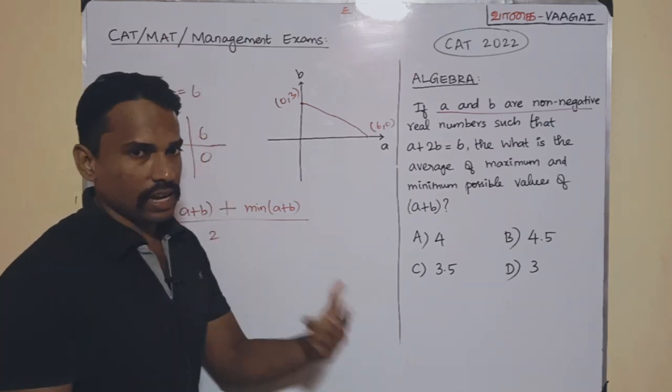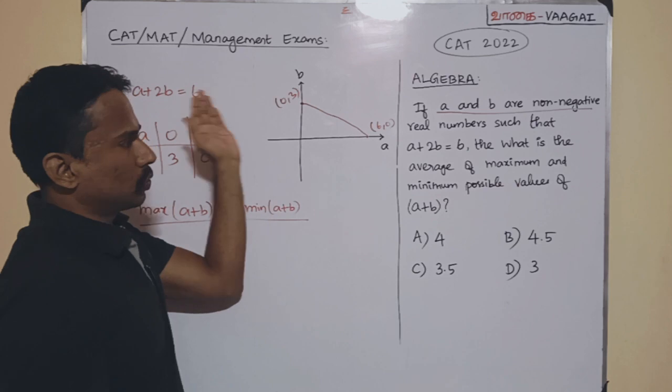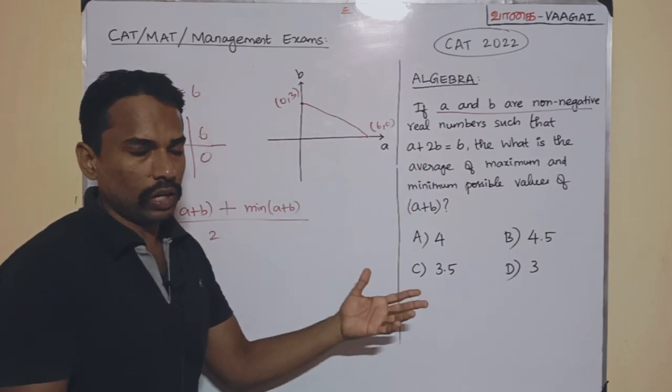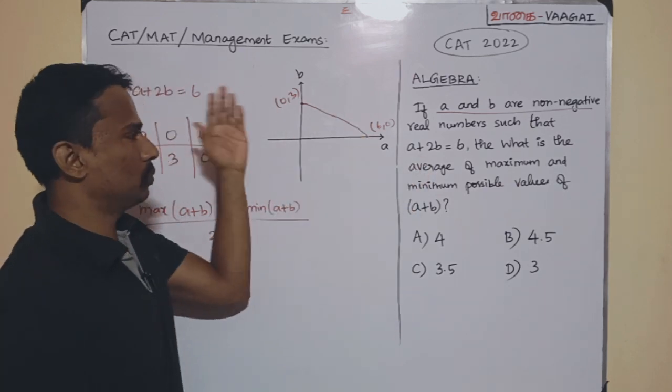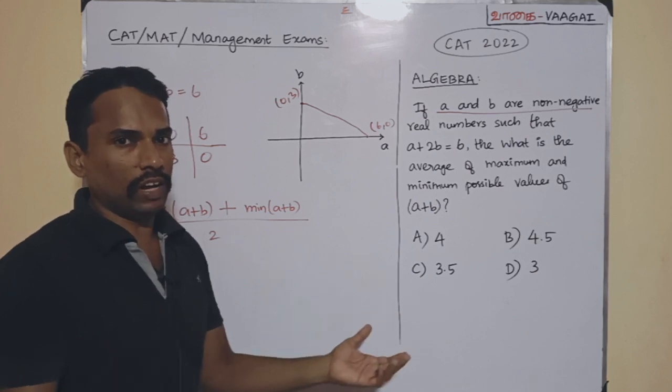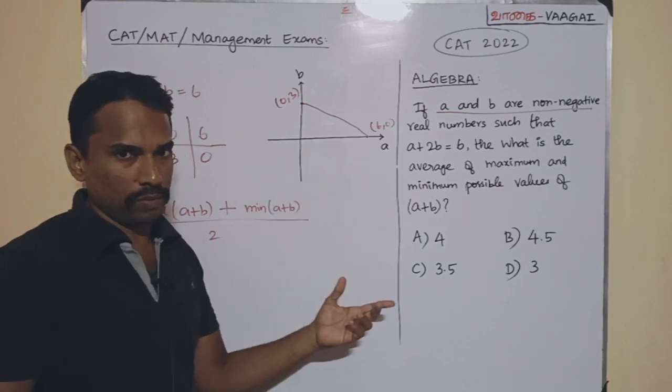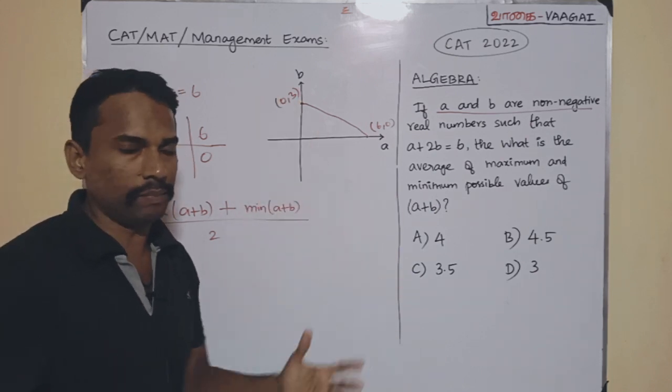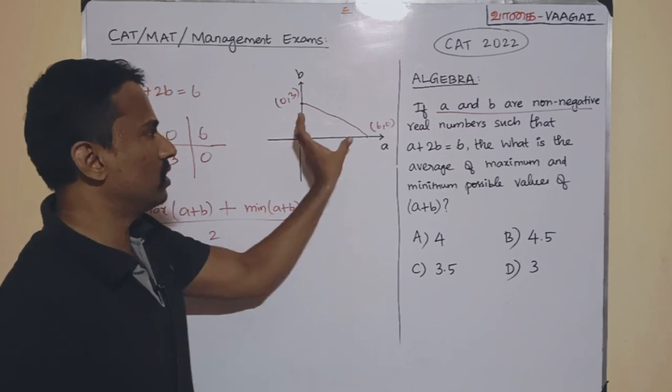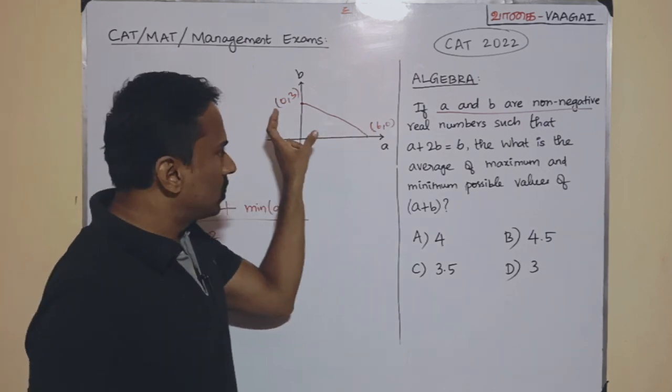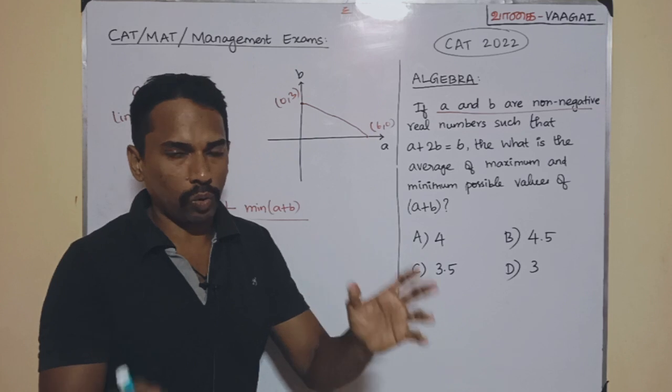And again, I remind you, we cannot go beyond this one. Because it will not give you the non-negative values. Because if you cross beyond, you will come to get negative values for at least one of those two variables. Exact one of those two variables will become negative. So, for that reason, what happens is we will have to take only points which are lying in this portion region only.